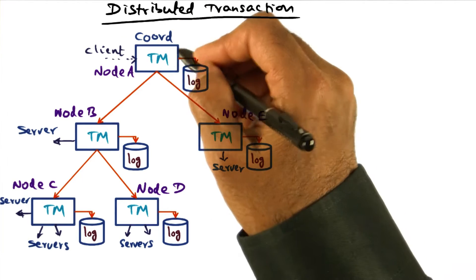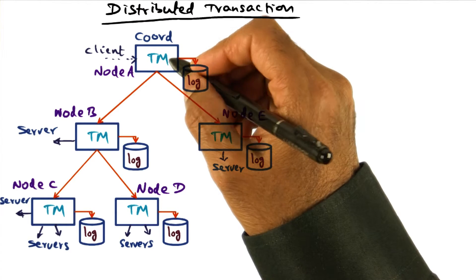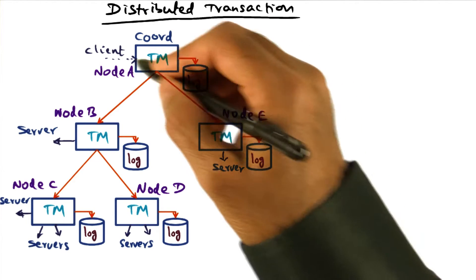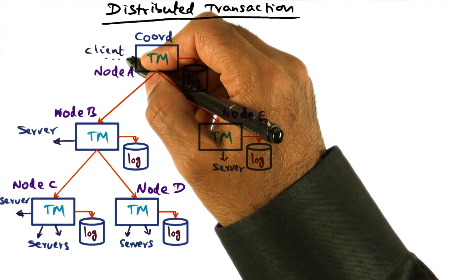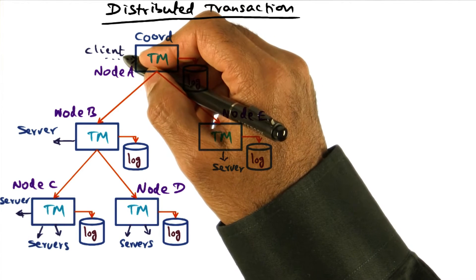Now the transaction manager, node A, has to manage the transaction trees corresponding to each of the client server interactions that is initiated by this client.